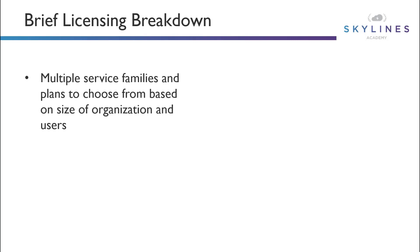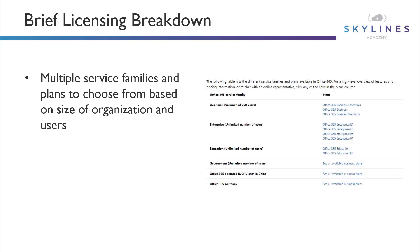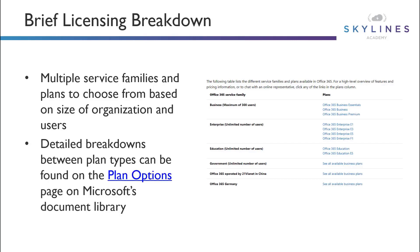Let's do a quick licensing breakdown. While there aren't going to be any specific questions on the exam breaking into specifics around licensing, it's good to understand that there are a lot of different licensing families that support Office and Microsoft 365. As you can see here, this is just a quick snippet pulled from the Office 365 service page that breaks down the different licensing for different organizations. For example, education has its own tier of licensing versus enterprise commercial customers, which is the designation for the A or the E designator for the licensing tiers. If you want to learn more about the plan options, feel free to click the link and look at Microsoft's document library for more information.